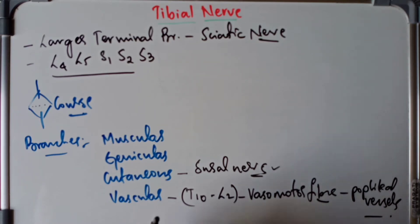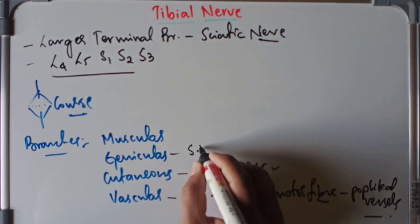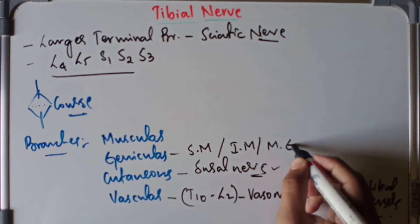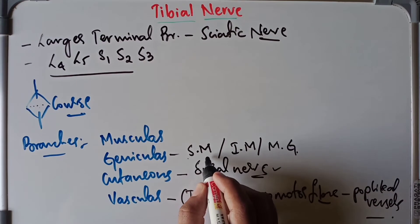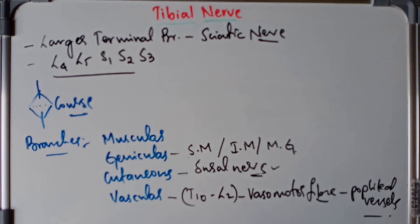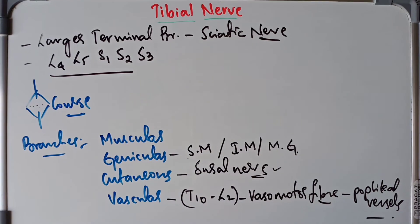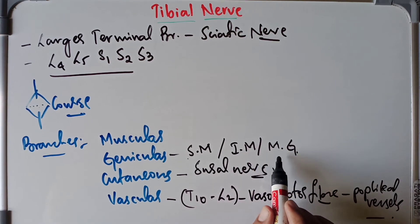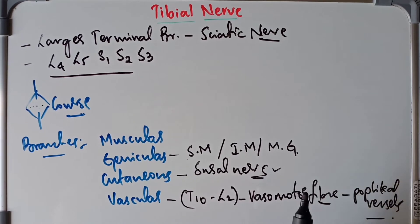Moving on to the genicular branches — just as we have the superior, inferior, and middle genicular arteries as branches of the popliteal artery, the nerve supply follows the same pattern. We have the superior medial genicular nerve, the inferior medial genicular nerve, and the middle genicular nerve. They all supply structures around the knee joint.